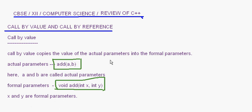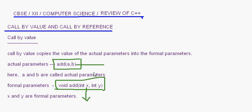Call by value copies the value of the actual parameters into the formal parameters. Here, 'a' and 'b' in the calling function are called the actual parameters, and 'x' and 'y' in the function definition are called the formal parameters. So 'a' and 'b' are actual parameters and 'x' and 'y' are formal parameters.